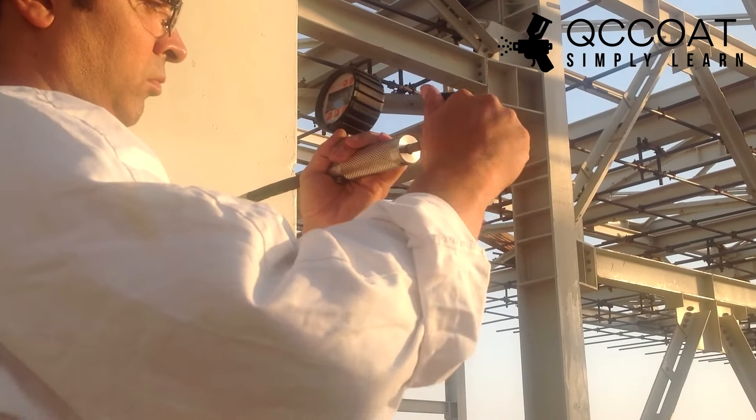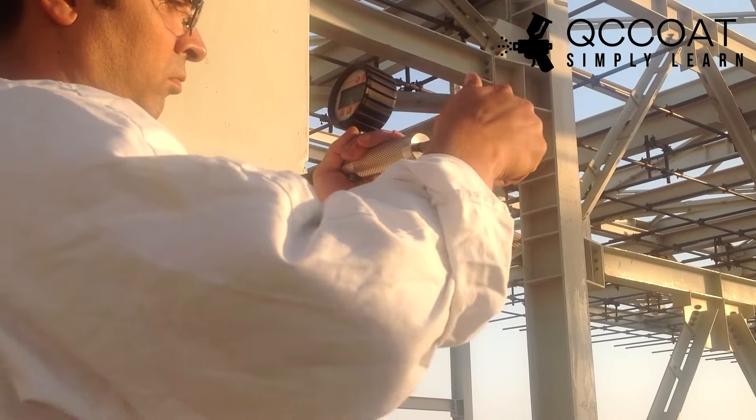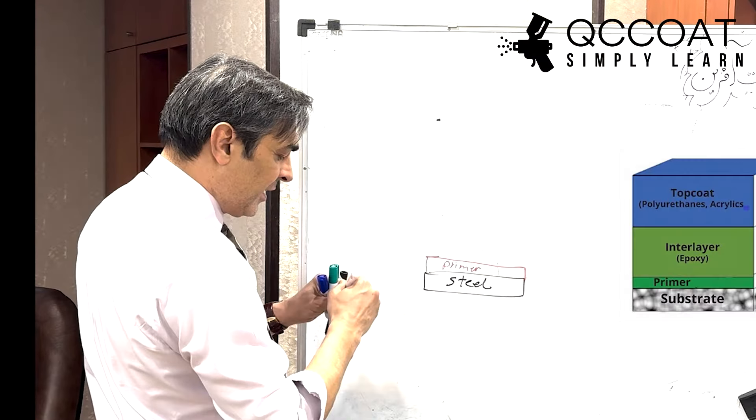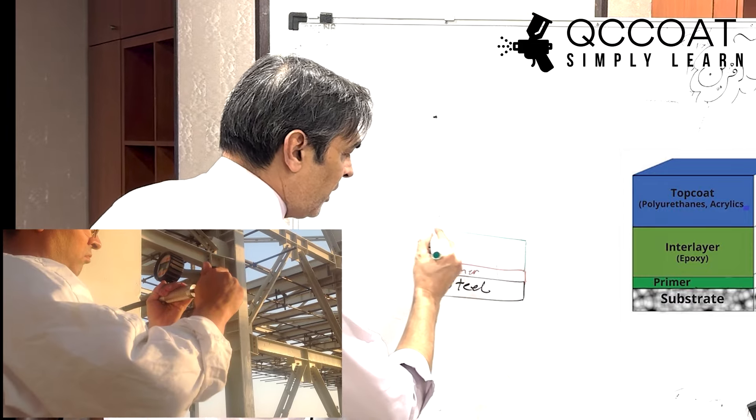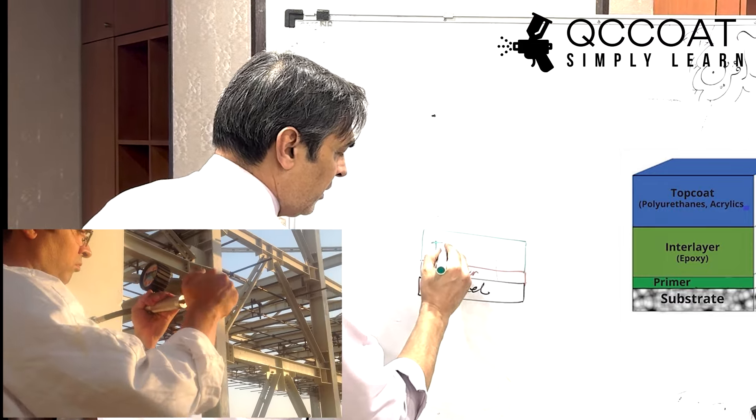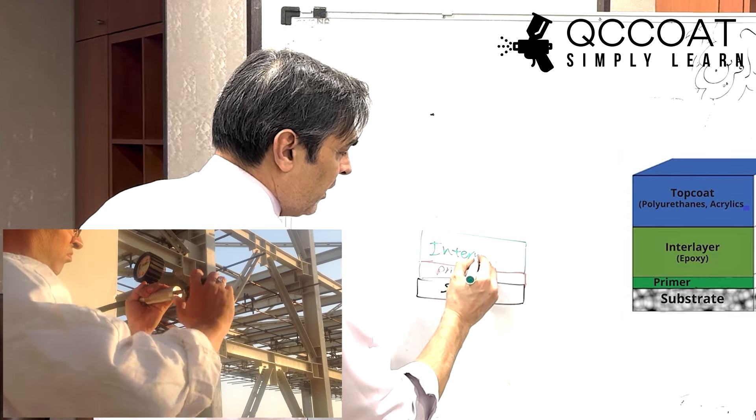I will answer these questions in this video. Suppose we have a three layer paint system that has been applied on the steel substrate. Now we want to know if the amount of adhesion of the paint system to the substrate is suitable or not.